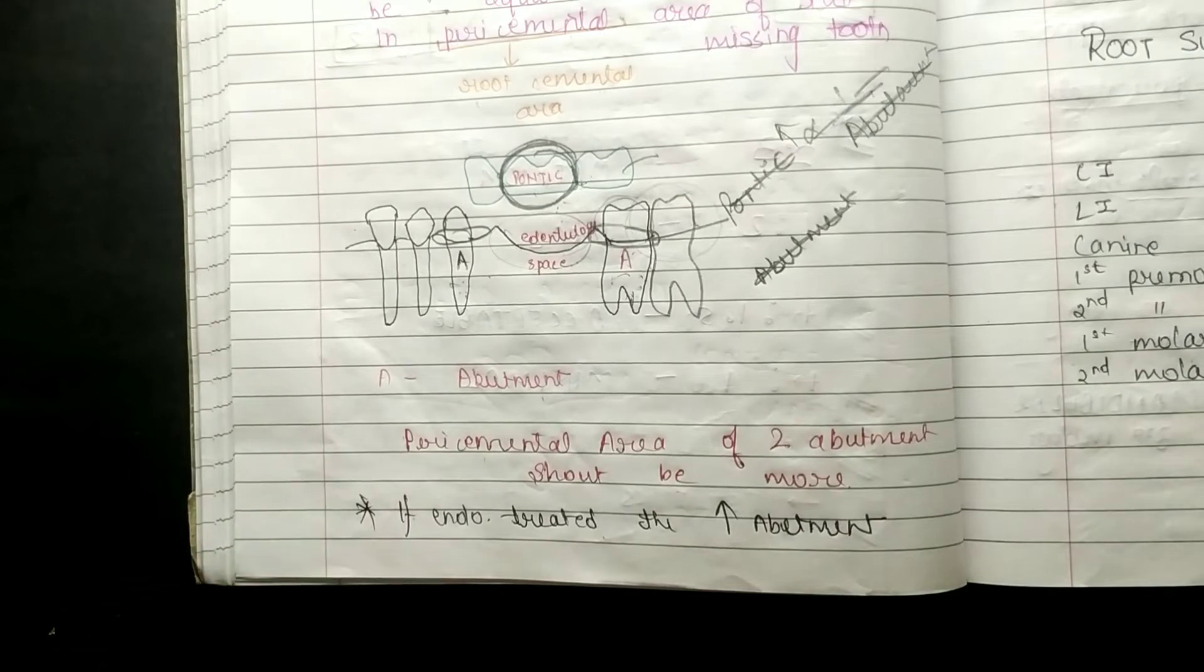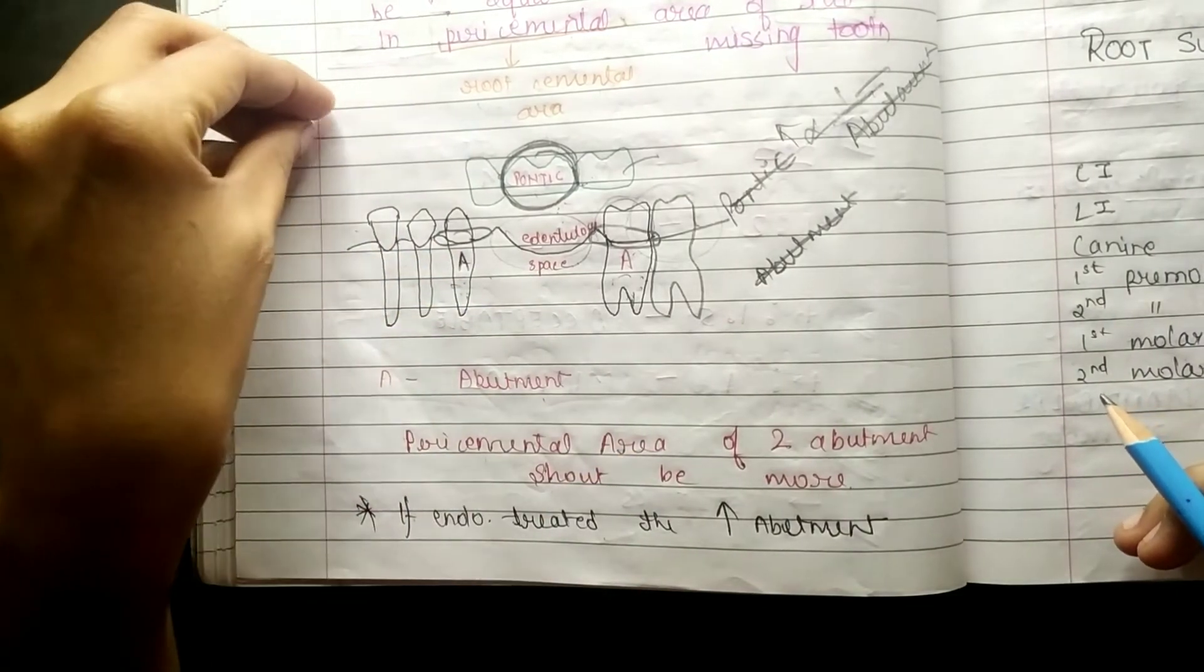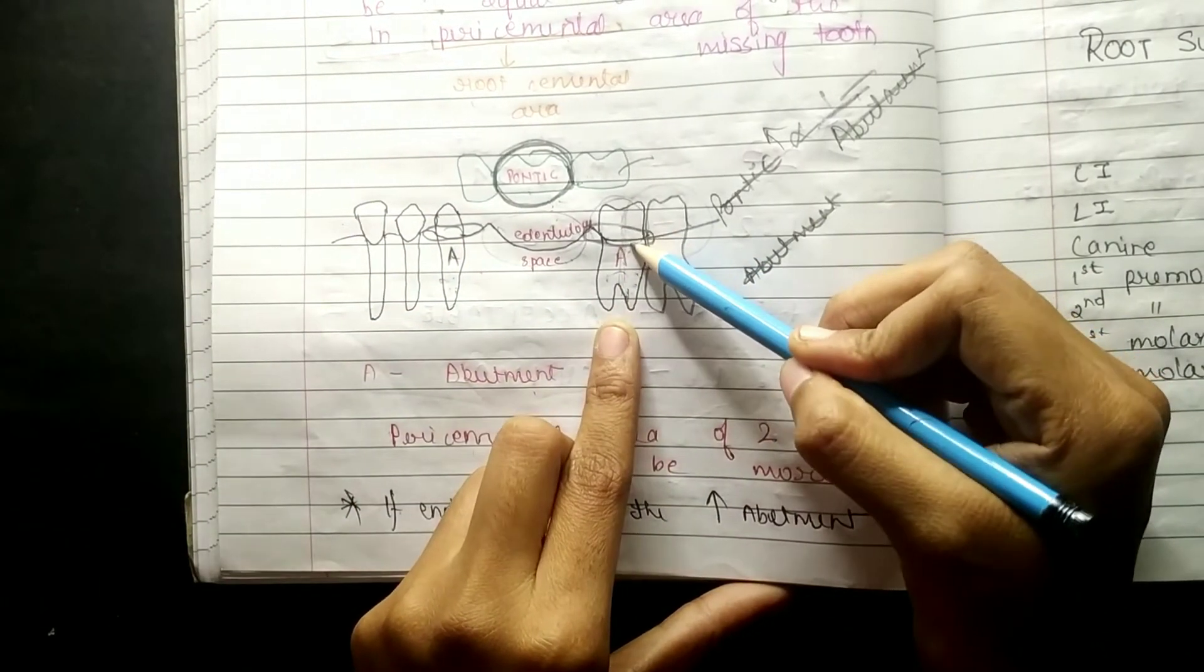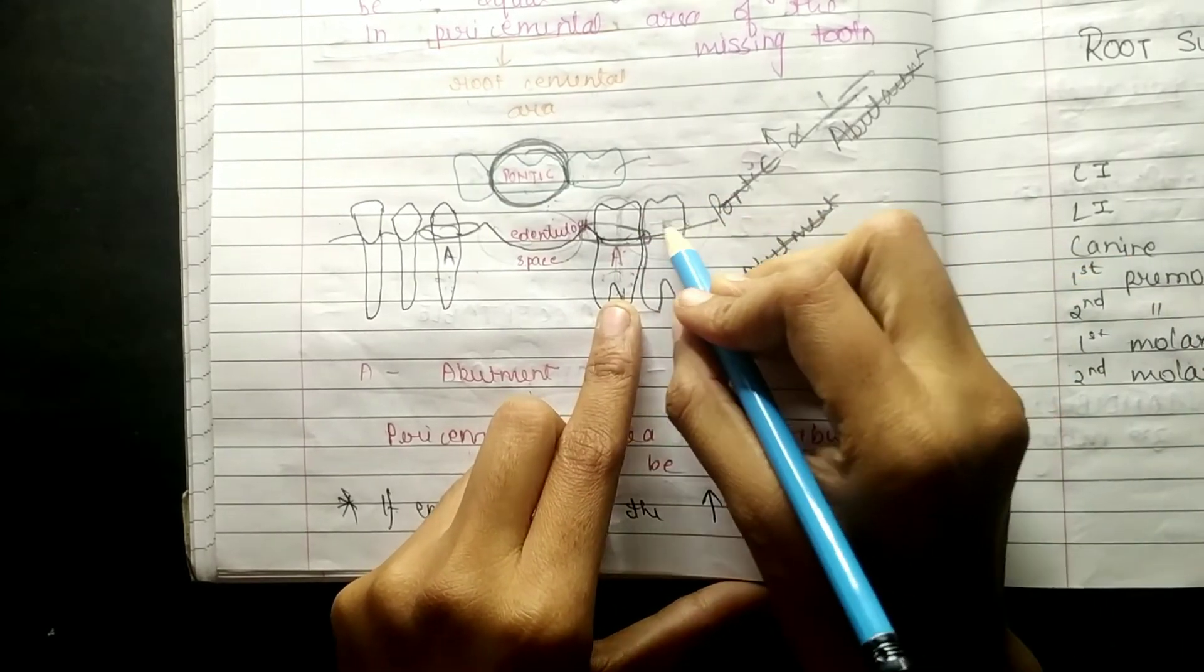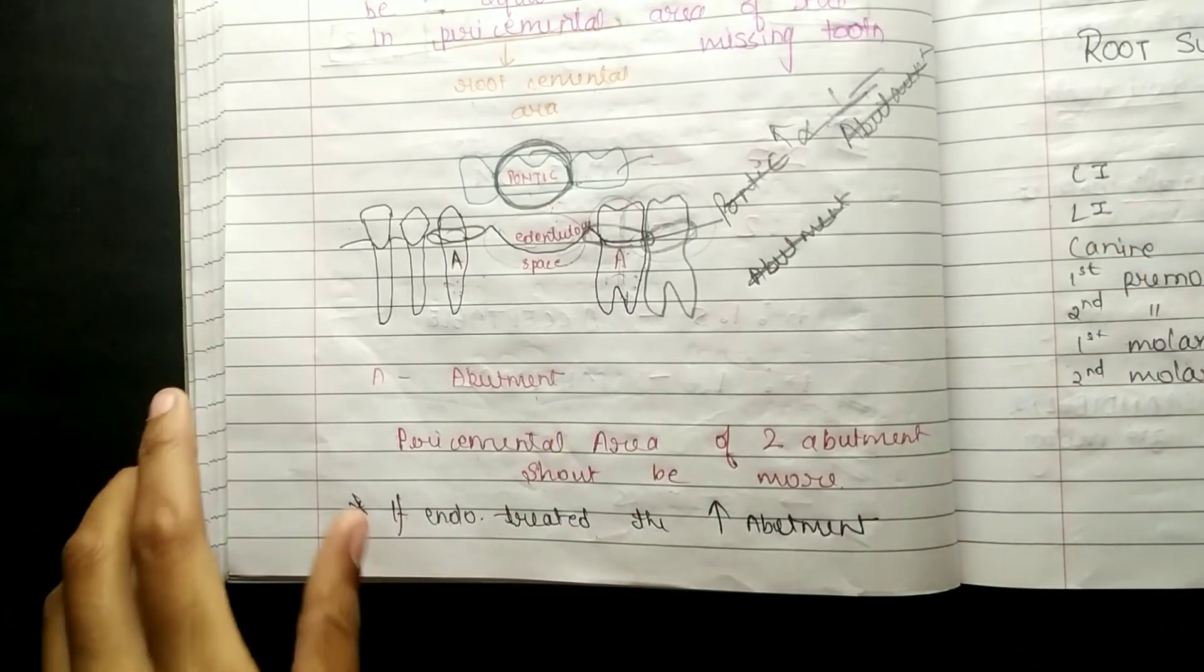If there is endodontic treatment, if the patient's endodontic treatment has been done before, and we want to take that tooth as an abutment, but endodontic treatment has already been done before, so we have to take the other tooth as an abutment.